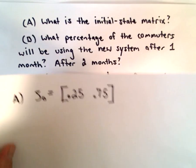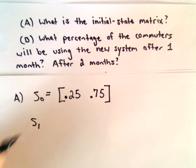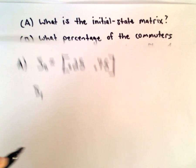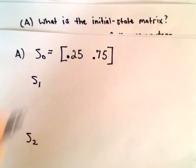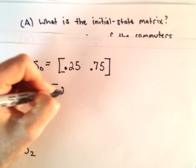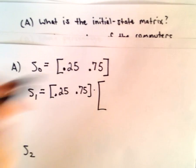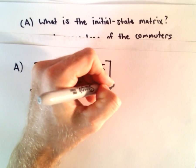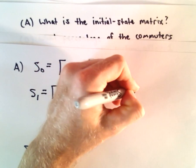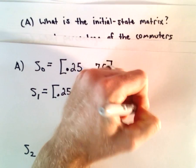To calculate the solutions for part B, we want to find the state matrix one month later and then two months later. To do that we'll take the initial state, 0.25 and 0.75, and multiply that by our transition matrix with entries 0.8, 0.2, 0.3, and 0.7.